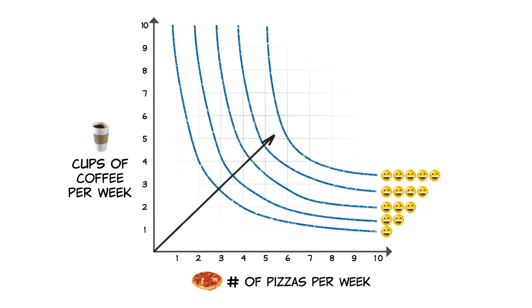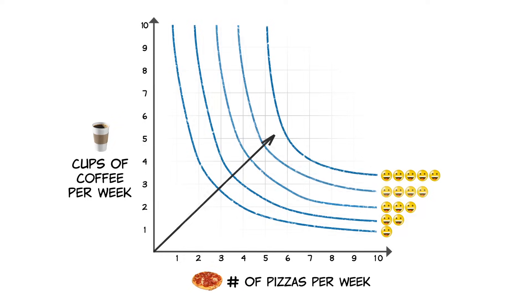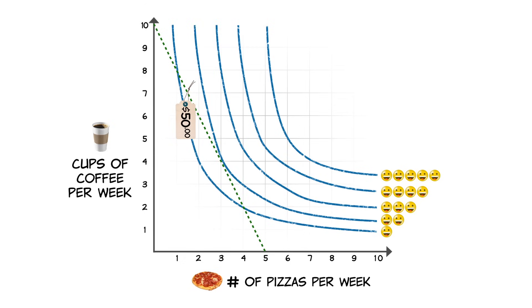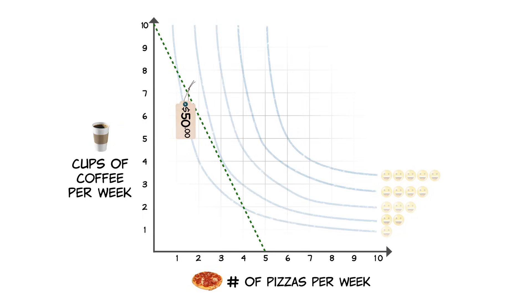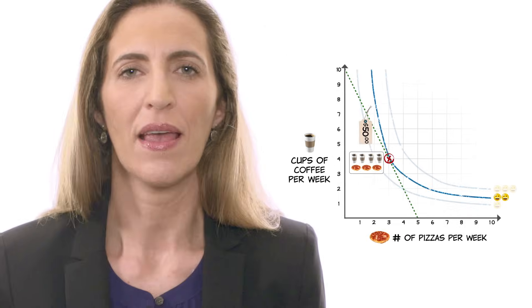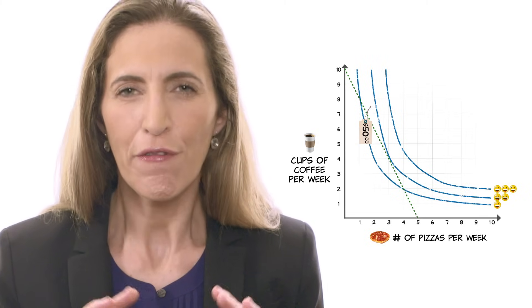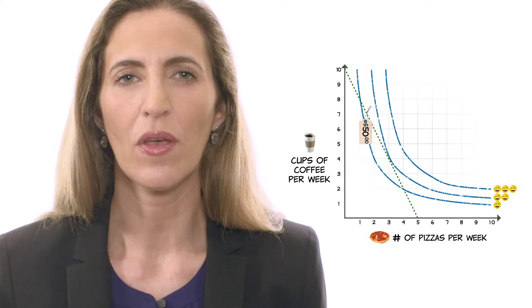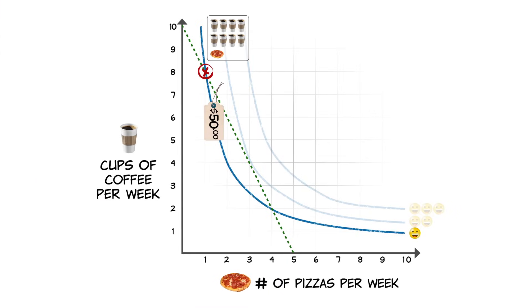Why? Because the more pizza and coffee you have, the happier you are. What keeps you from reaching this indifference curve? If you thought prices and income, you are right. Your budget constraint determines what you can afford. So your optimal consumption combination will be where your budget constraint is tangent to the highest indifference curve. To see why, let's look at a point where the budget line intersects one of your indifference curves.